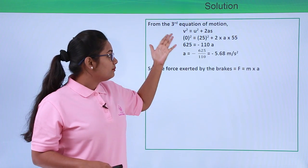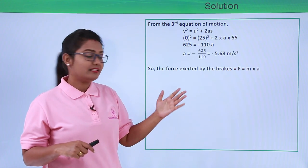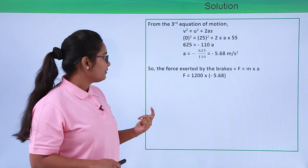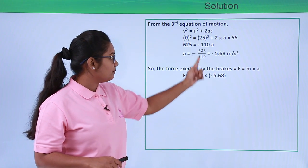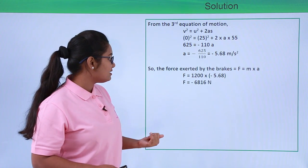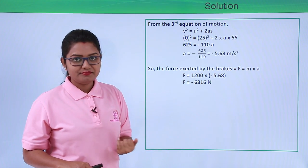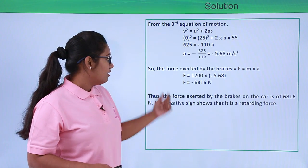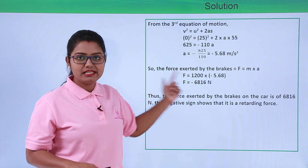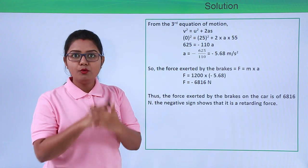The force exerted by the brakes can be calculated using Newton's second law: F = mass × acceleration. So force = 1200 × (−5.68) = −6816 newtons. The force is negative since it acts in the direction opposite to the motion of the car. This is called a retarding force, as discussed in the previous chapter on force and laws of motion.